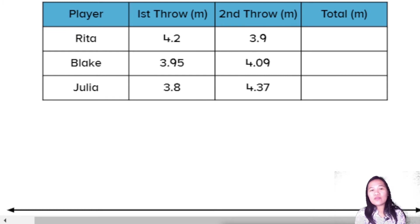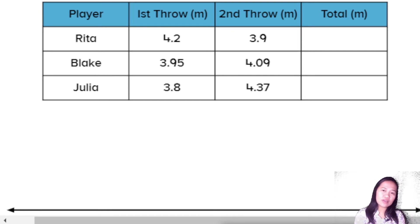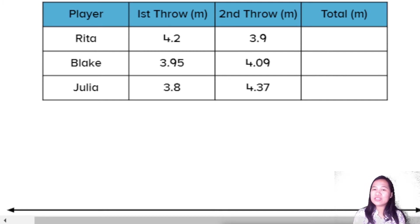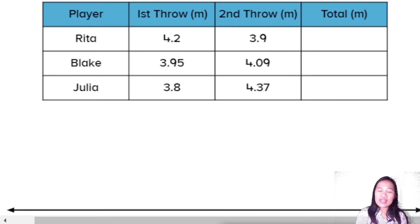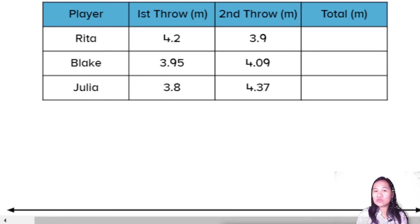In the first round: Blake threw 4.2 meters, Rita threw 3.35 meters, and Julia threw 3.8 meters. In the second round: Rita controlled 3.9 meters, Blake controlled 4.900 meters, and Julia controlled 4.307 meters.